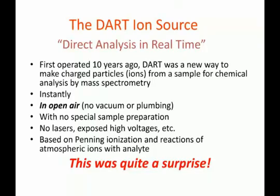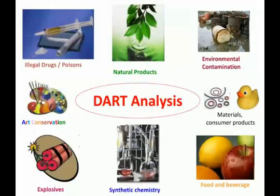DART got started more than 10 years ago. In fact, we first measured the mass spectra from a DART in 2002 or 2003, and it was really quite exciting. We originally planned to build something else, and the fact that we could analyze compounds in open air in front of the mass spectrometer simply by putting things in front of it was really quite exciting. In the past 10 years that DART has been around, it has been applied to almost every kind of analysis — from synthetic chemistry to forensic analysis, art conservation, explosives, and quite a bit of application recently to food and beverage analysis, particularly pesticides on fruit.